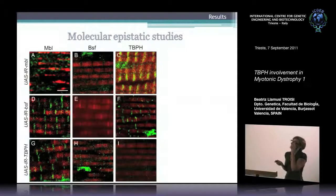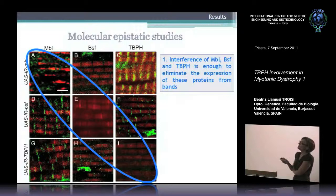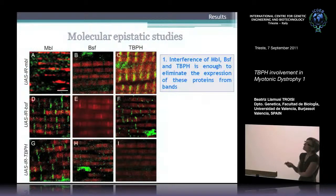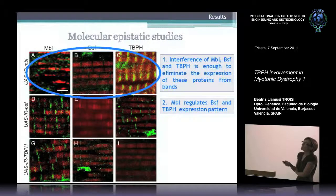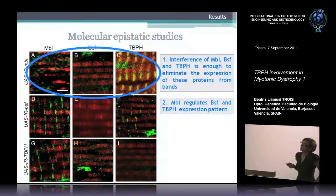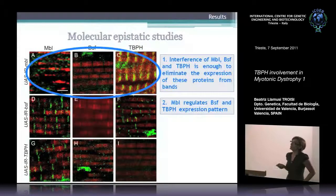We performed molecular epistasis studies with these three proteins. We saw that RNAi of muscle-blind, BSF, and TBPH was enough to eliminate the expression of these proteins in the sarcomeric bands. Using flies with muscle-blind expression interfered in muscle, removal of muscle-blind changed BSF and TBPH expression patterns — these proteins now had exactly the same expression patterns as they show in CTG-expressing flies. In the case of BSF, it is no longer detectable in bands; in the case of TBPH, we observed increased expression in bands and also in nuclei.